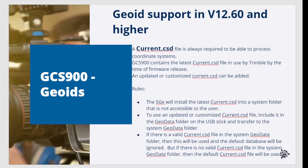A coordinate system database file named current.csd is always required to process coordinate systems. GCS 900 contains the latest current.csd file in use by Trimble at the time of firmware release. However, an updated or customized current.csd can be added. The firmware file SG3 or SG4 will install the latest current.csd into a system folder that is not accessible to the user. To use an updated or customized current.csd, include it in the GeoData folder on the USB stick and transfer it to the system GeoData folder. If a valid current.csd is present in the system GeoData folder, it will be used and the default current.csd will be ignored; otherwise, the default embedded current.csd file will be used.